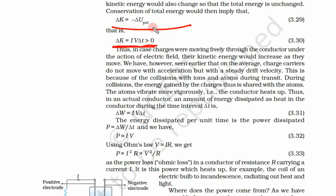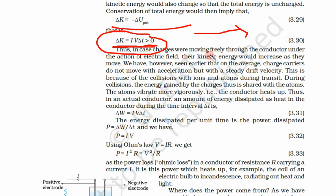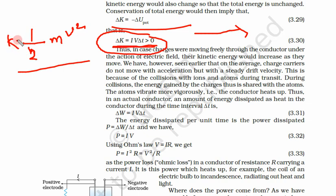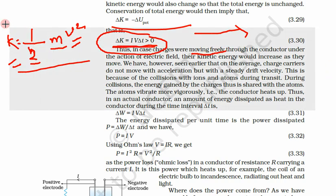Positive kinetic energy means the velocity of the charge carriers — the electrons — is increasing, because kinetic energy equals half·m·v². Mass and the half cannot change, so velocity must be changing. However, this is only the case when there are no collisions and charge carriers are moving freely.